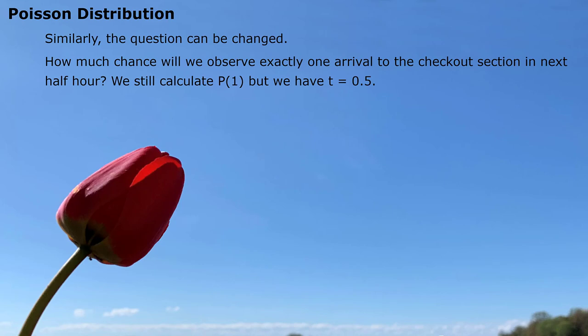Similarly, the question can be changed. How much chance we will observe exactly one arrival to the checkout section in next half hour. Our time unit changes this time to half hour. In that case, on average 16 arrivals being observed per hour, so half hour we would observe eight arrivals. We are looking for exactly one arrival, the probability. x equals one. This is how we put information in the formula to get the answer. Again, Excel solution here.